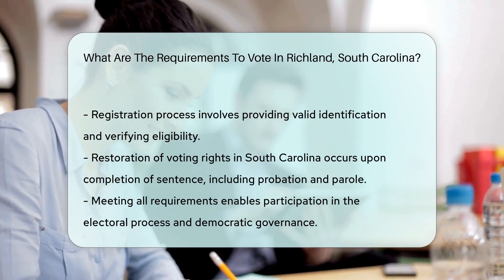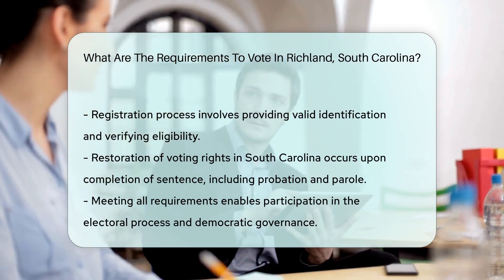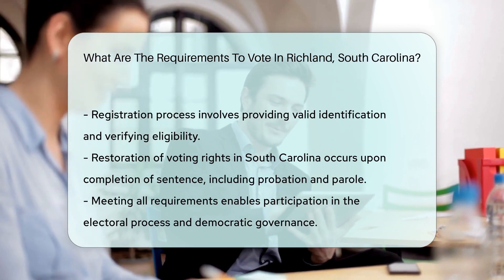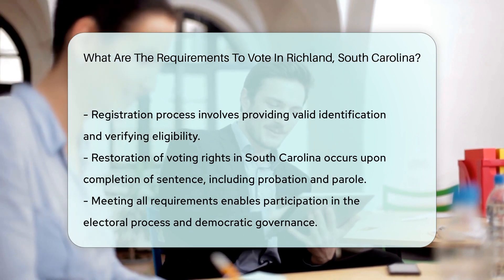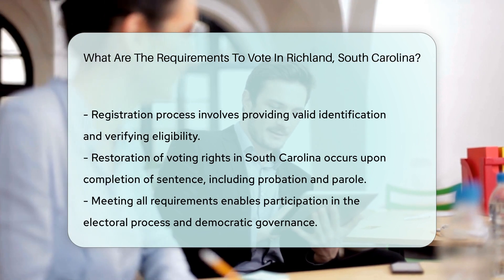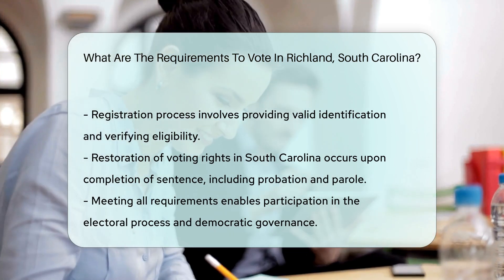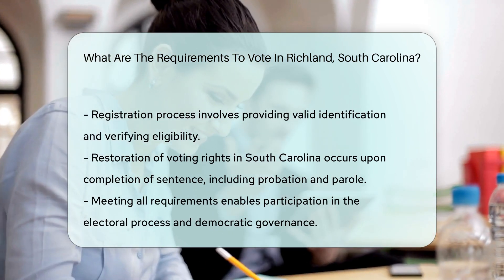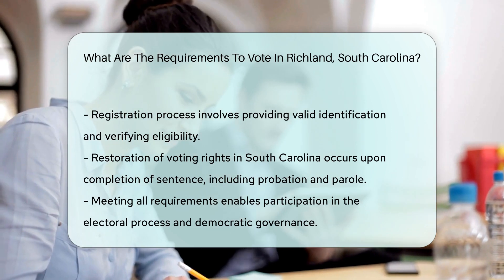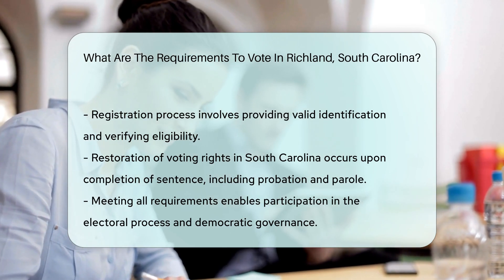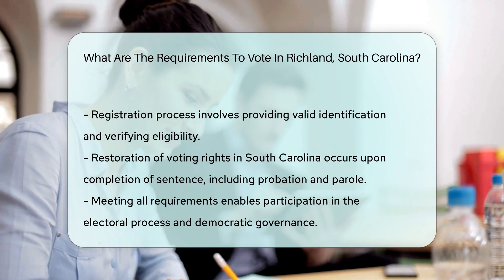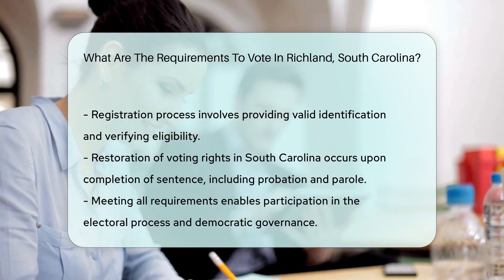In summary, to vote in Richland, South Carolina, one must be a U.S. citizen, a resident of Richland County, at least 18 years old by the next election, registered to vote, not serving a felony sentence, and not declared mentally incompetent by a court. Meeting these requirements enables individuals to participate in the electoral process, contributing to the democratic governance of their community.